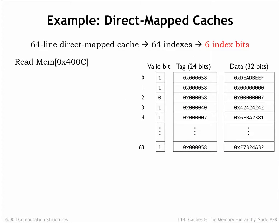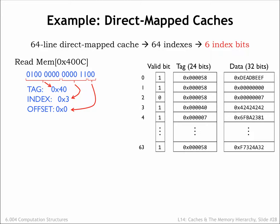Let's try a few more examples using a direct mapped cache with 64 lines. Suppose the cache gets a read request for location 4000 in hex. We first write the address in binary so we can easily divide it into the offset, index, and tag fields. For this address, the offset bits have the value 0, the cache line index bits have the value 3, and the tag bits have the value 40. So the tag field of cache line 3 is compared with the tag field of the address — since there's a match, we have a cache hit and the value in the data field can be used to satisfy the request.